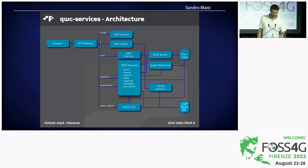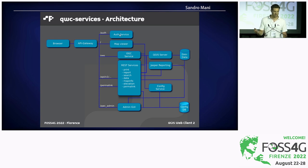The architecture: from the browser, all requests go through an API gateway which routes requests depending on the path to the different services of the whole ecosystem. The core is the QGIS server, which communicates with the map viewer through an OGC service. This OGC service enforces permissions from authenticated users. There is an authentication service allowing users to log in with different authentication backends. There's also a collection of REST services providing additional functionality, and finally an administration interface to manage users' permissions and resources.